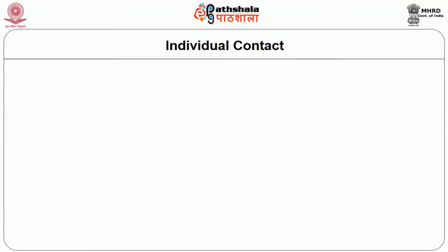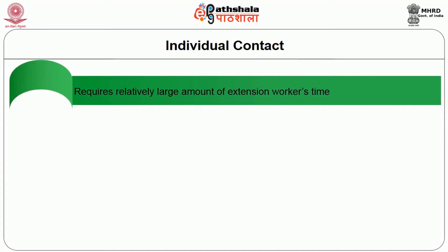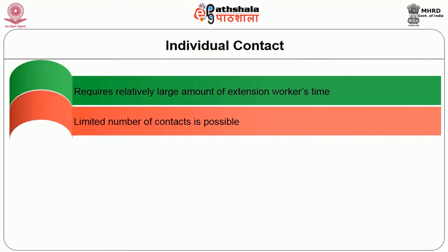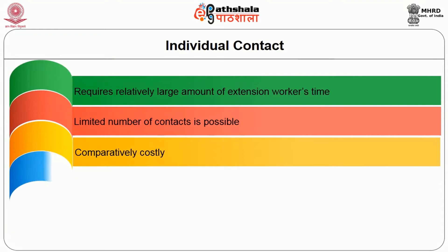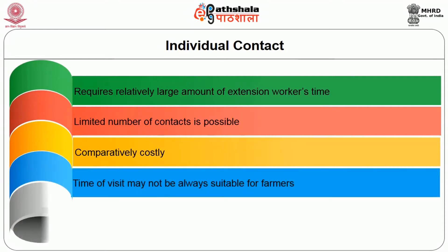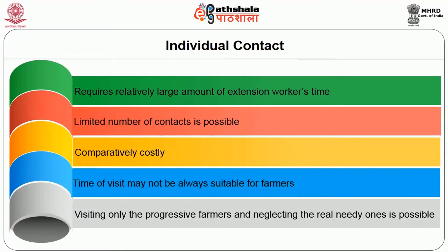The limitations of farm and home visit are: it requires a relatively large amount of the extension worker's time; only a limited number of contacts is possible; it is comparatively costly; the time of visit may not always be suitable for the farmer; and visiting only the progressive farmers while neglecting the truly needy farmers is possible.